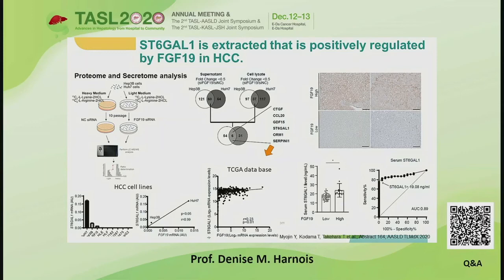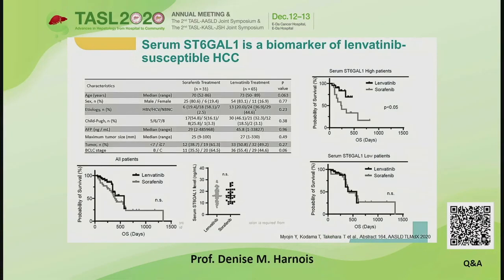Patients with FGF19-high HCCs were identified with high sensitivity and specificity using a cutoff serum ST6-GAL1 value of 19.1 nanograms per milliliter. Based on experimental evidence showing high lenvatinib susceptibility of FGF19-driven HCCs, they hypothesized that a baseline serum ST6-GAL1 level would be a useful biomarker for predicting lenvatinib susceptibility in HCC patients. To test this hypothesis, they examined pre-treatment serum ST6-GAL1 levels in 96 advanced HCC patients who underwent either lenvatinib or sorafenib treatment.